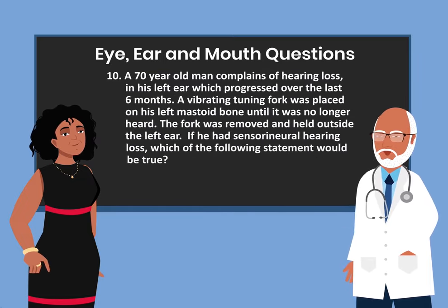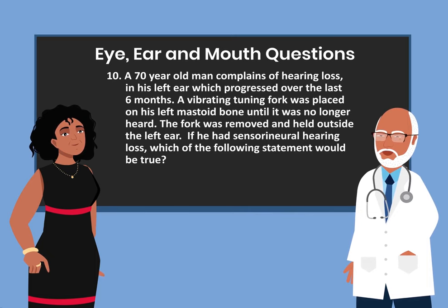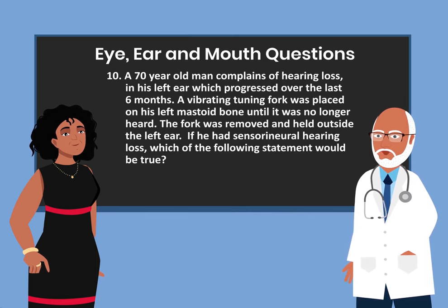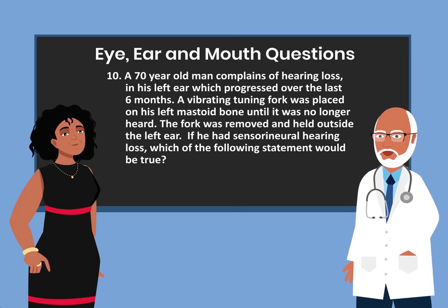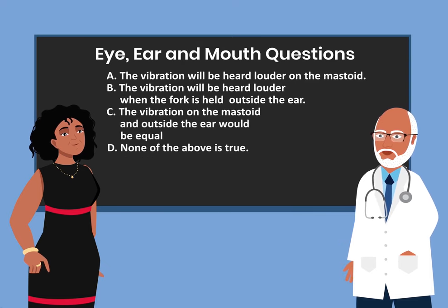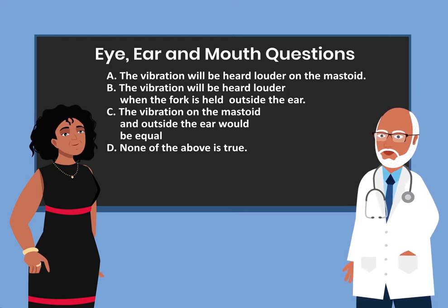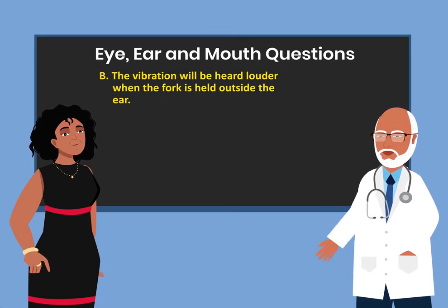Question 10. A 70-year-old man complains of hearing loss in his left ear which progressed over the last six months. A vibrating tuning fork was placed on his left mastoid until it was no longer heard. The fork was removed and held outside the left ear. If he had sensorineural hearing loss, which of the following statements would be true? A. The vibration will be heard louder on the mastoid. B. The vibration will be heard louder when the fork is held outside the ear. C. The vibration on the mastoid and outside the ear would be equal. D. None of the above is true. The answer is B.